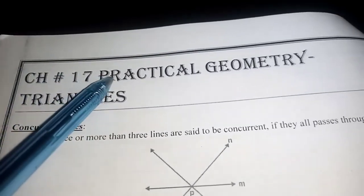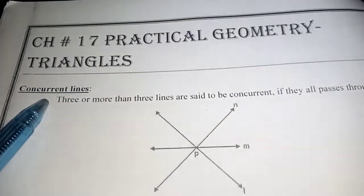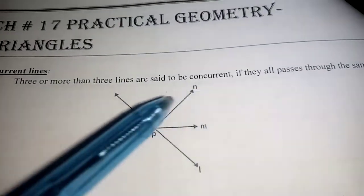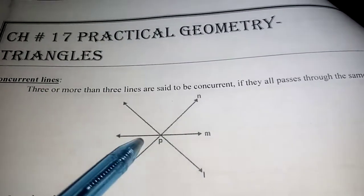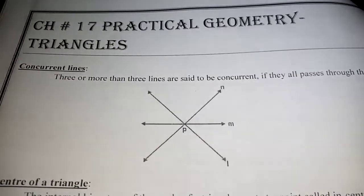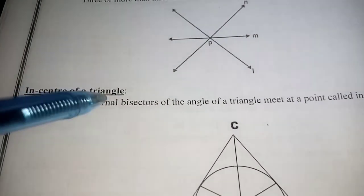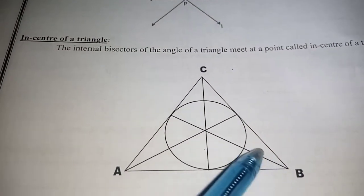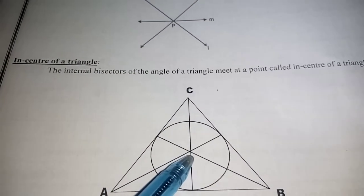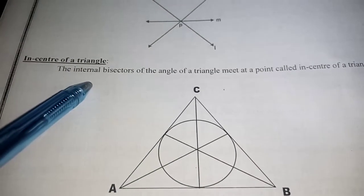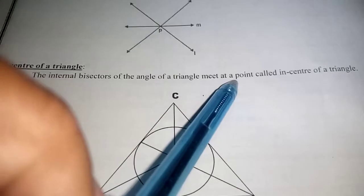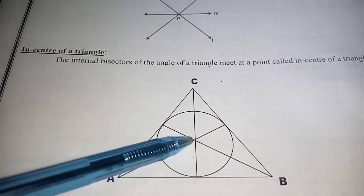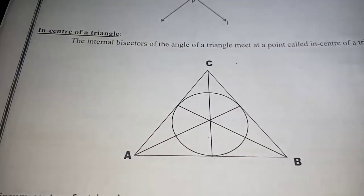Now definition number 17, which is about vertical geometry. First, concurrent lines: three or more lines are said to be concurrent if they all pass through a single point; these lines are called concurrent lines. Next, the incenter of a triangle: the internal bisectors of the angles of a triangle meet at a point which is called the incenter of a triangle, or the point of concurrency of the internal angle bisectors of a triangle is called the incenter.